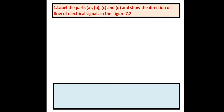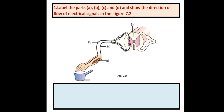Label the paths A, B, C and D and show the direction of flow of electrical signals in the figure 7.2. Here is the diagram given. Let's see what these labelings are.